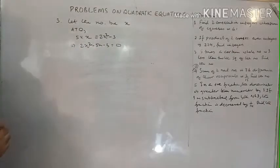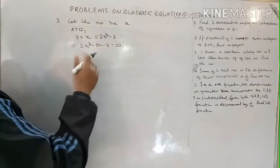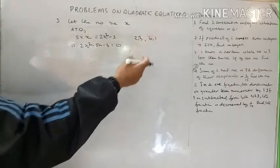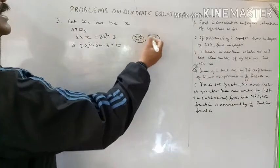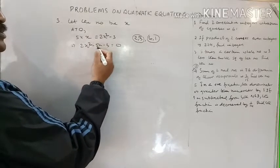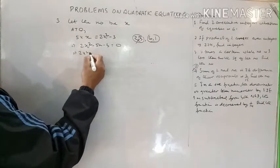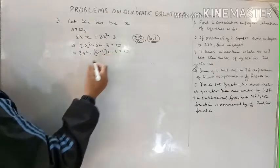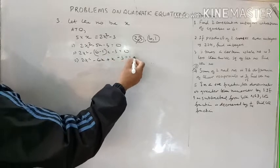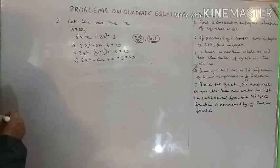The product is 6. Factor pairs of 6: 2 and 3 (sum 5), or 6 and 1 (difference 5). If we take 2 and 3, there would be 3 negative signs and 1 positive — not allowed. So we take 6 and 1. Writing: 2x squared minus 6x plus x minus 3 equals 0. There are 2 positive and 2 negative signs.